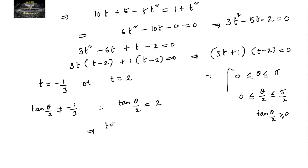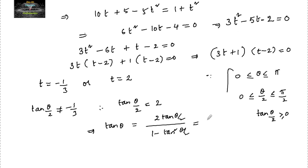Using the double angle formula tan θ = 2tan(θ/2) / (1 − tan²(θ/2)), we get tan θ = (2 × 2) / (1 − 4) = 4 / (−3) = −4/3. So the slope is −4/3.